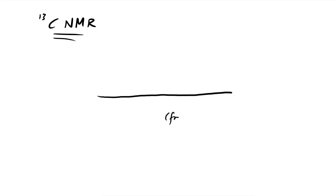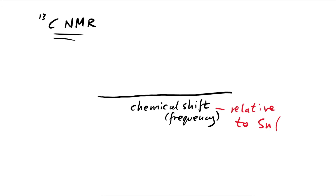Let's go for carbon-13 NMR first, because it's quite a bit easier than hydrogen. The x-axis of the results graph is essentially frequency, but we change it to something called chemical shift. This is done relative to tetramethylsilane — we're always going to see a TMS peak, and then to the left we see other peaks from our actual substance. The symbol is lowercase delta and the units are parts per million.